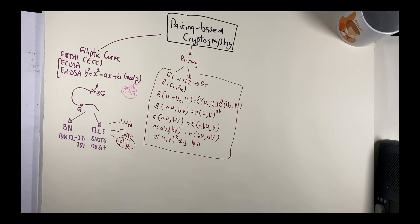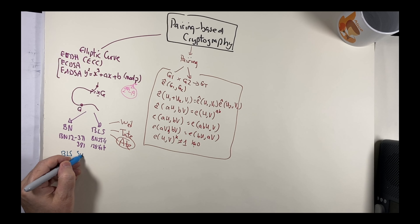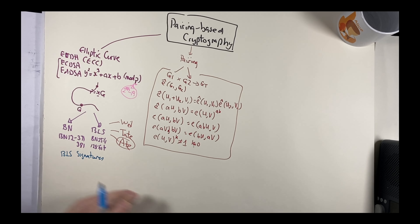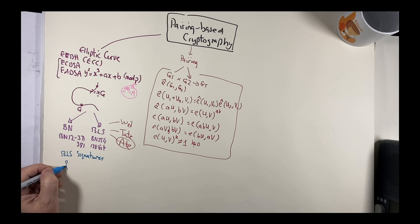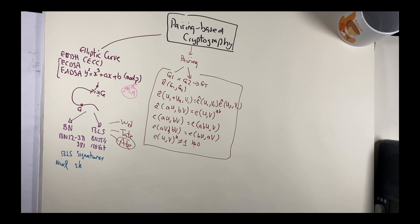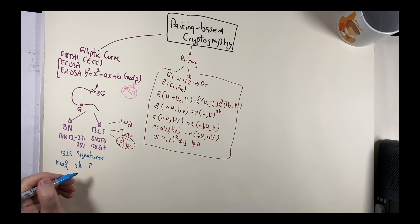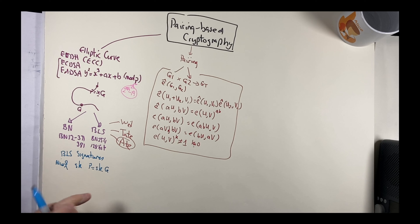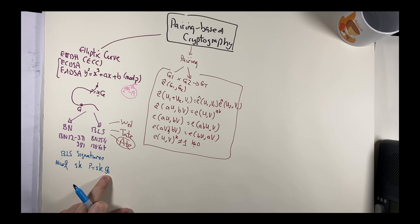Let's look at an example: BLS signatures, a very efficient signature method. Alice creates a secret key — a 256-bit random scalar value, not a point — as her private key. She then creates a public key, which is SK times the base point from G1. This becomes her public key.